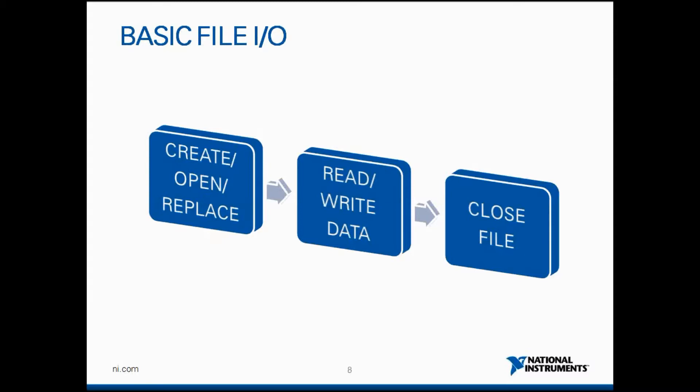The basic File IO structure is actually a three-step process. First, if I have to use a file, I need to create a reference to that file. If the file already exists, I just open it. I may also want to replace an existing file with a completely new one, or create a totally new file which is non-existent on disk. For this I use the first step: create, open, or replace a file.